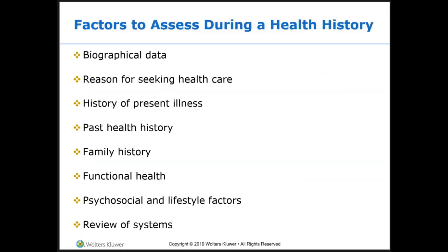Factors to assess during a health history: much of the biographical data may already be in the patient's chart, but if it's missing, we need to fill it in. Be sure to identify the patient's primary language, as you may need an interpreter from the facility — not a family member — to explain medical procedures or help with the health history. Many bilingual patients may need information interpreted in their primary language to gain comprehension, and we wouldn't want someone to consent to something they didn't fully understand.